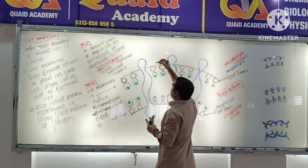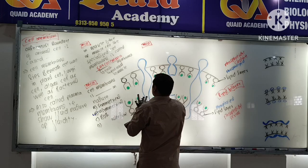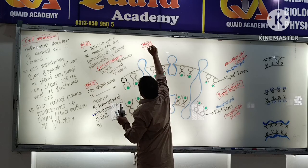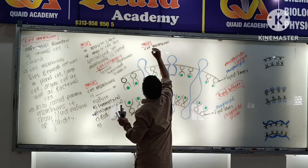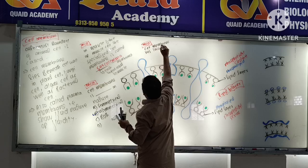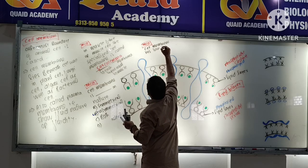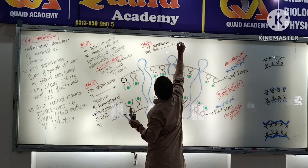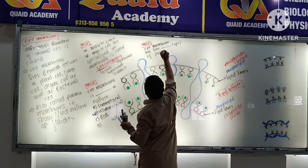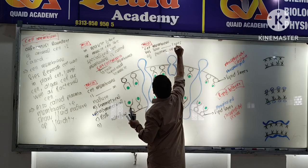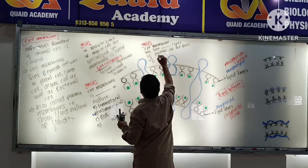Next MCQ: the cell membrane has a total of dash types of proteins on the basis of arrangement. On the basis of arrangement, how many types of proteins does the cell membrane have?